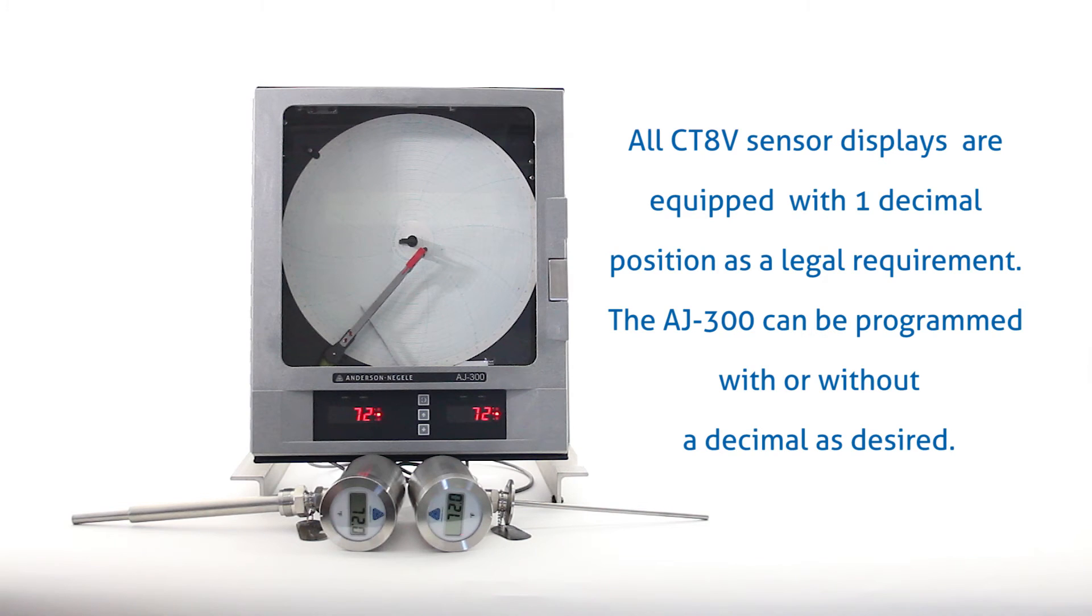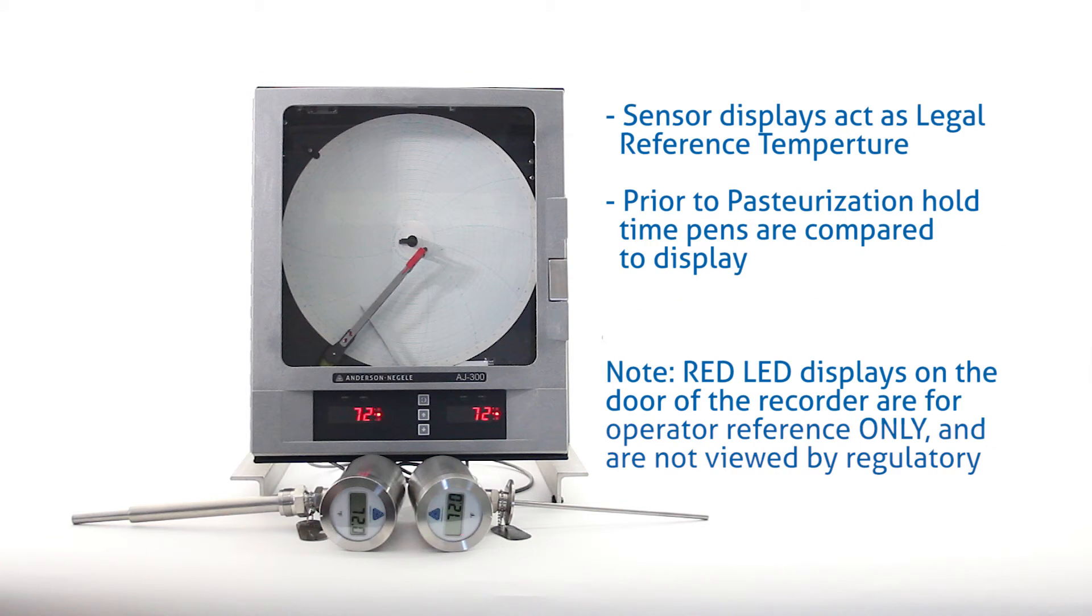All CT8V sensor displays are equipped with one decimal position as a legal requirement. The AJ300 can be programmed with or without a decimal as desired. The display on each of the sensors acts as the legal reference temperature for the system.